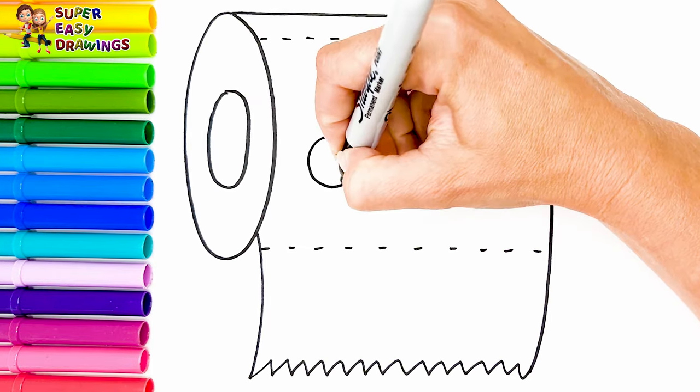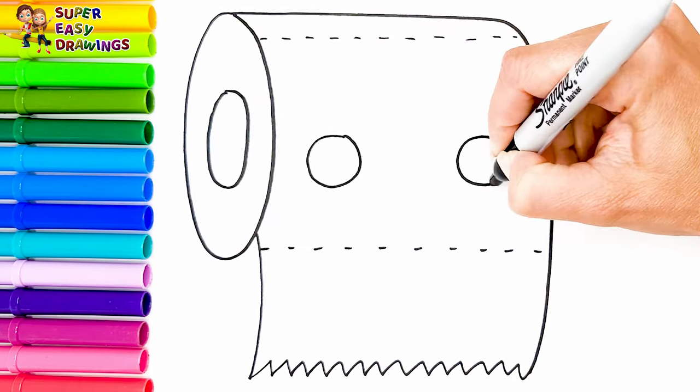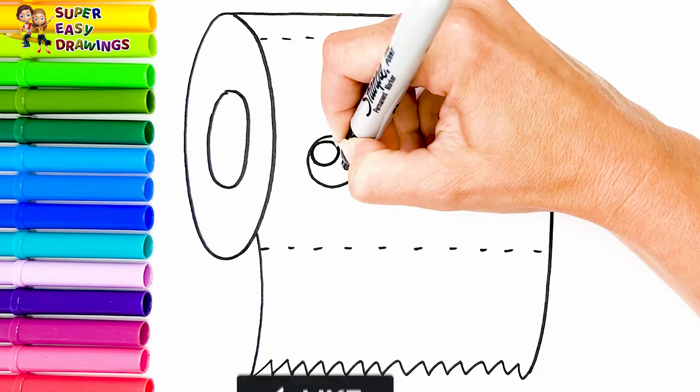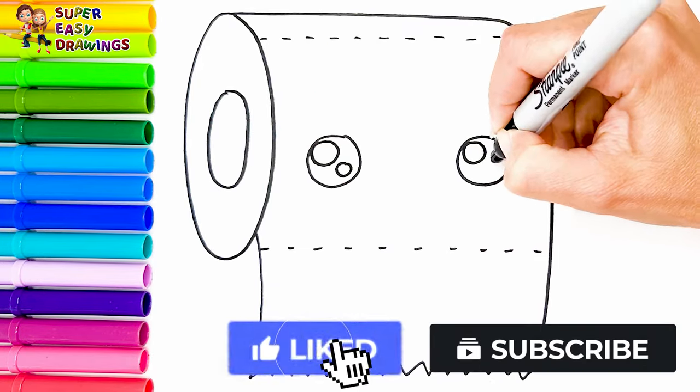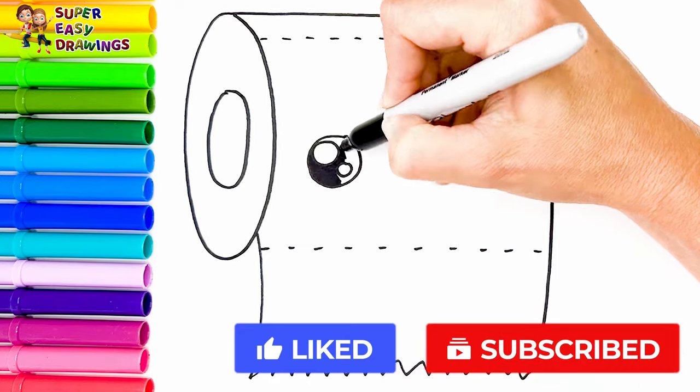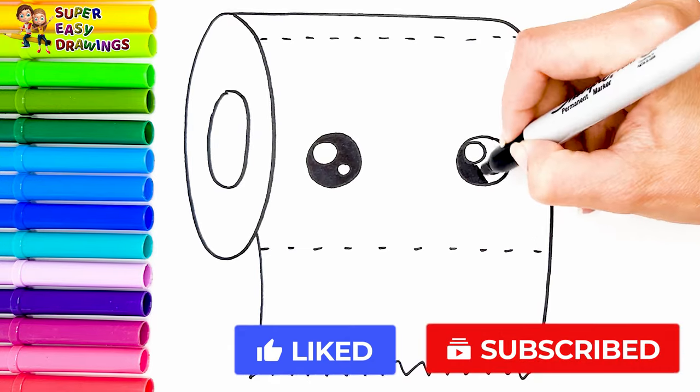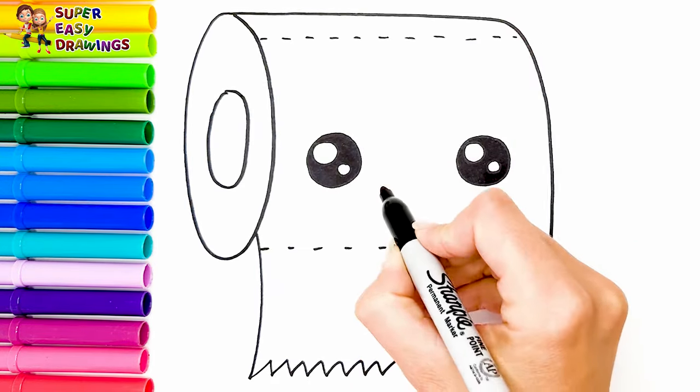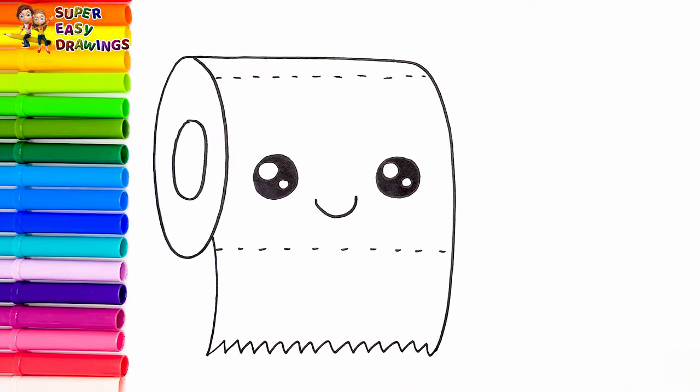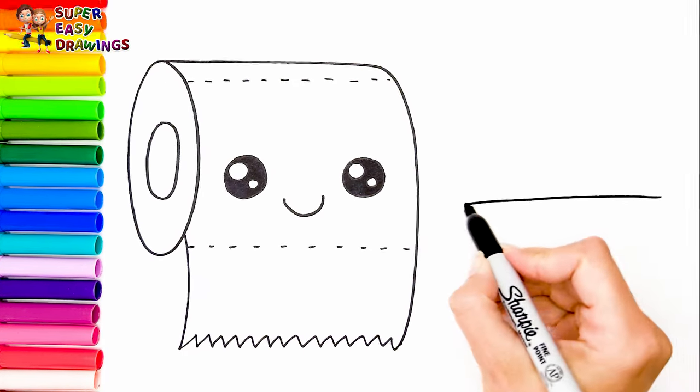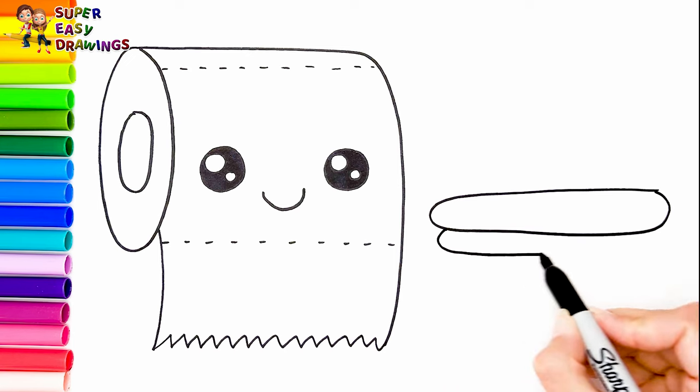Now let's draw a cute face for our toilet paper. I draw her two cute eyes and her smiling mouth. Now let's draw a simple toilet next to her.